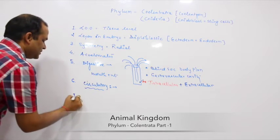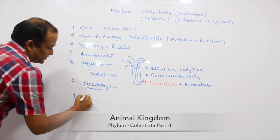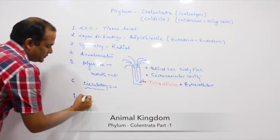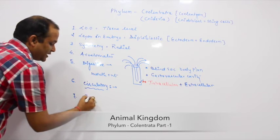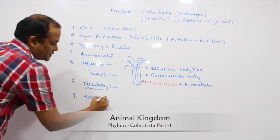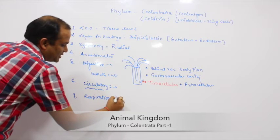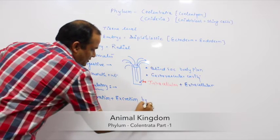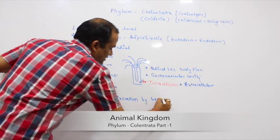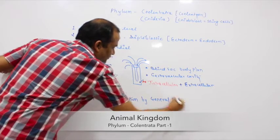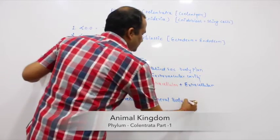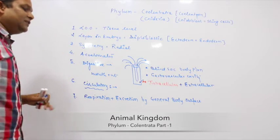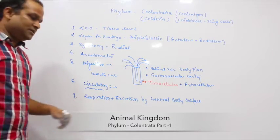After circulatory system is excretory and respiratory. Respiration plus excretion is by general body surface. No special organs of respiration and excretion are present in cnidarians.